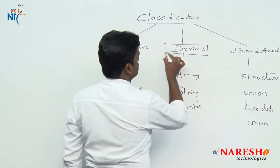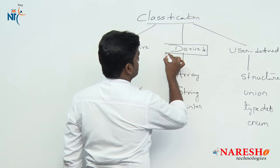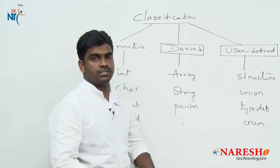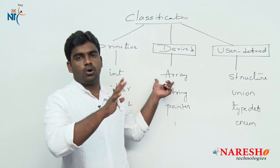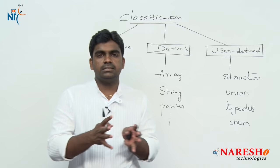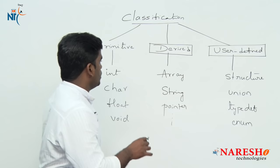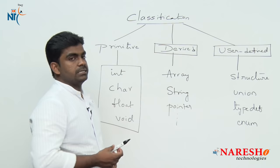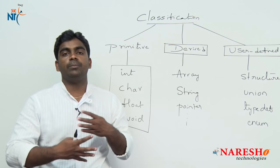Derived data types and user-defined data types will be discussed later, since arrays, strings, structures, and unions are separate concepts in C language. For now, data types means just these primitive data types, which are again subdivided into further types.